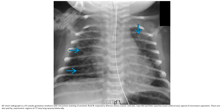This radiograph in a 41-week gestation newborn with meconium-stained amniotic fluid and respiratory distress shows coarse linear rope-like branching high-density opacities typical of meconium aspiration. There are also patchy asymmetric regions of heterogeneous lung opacity bilaterally.